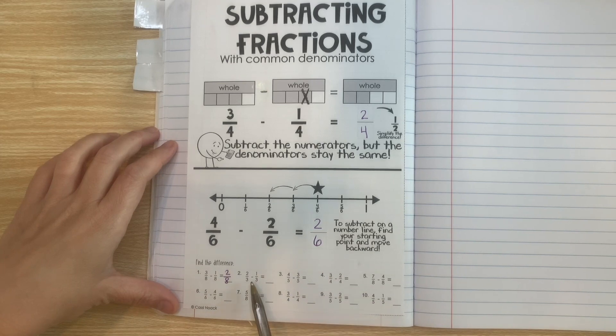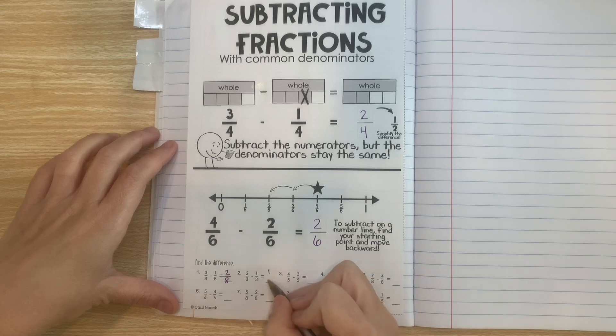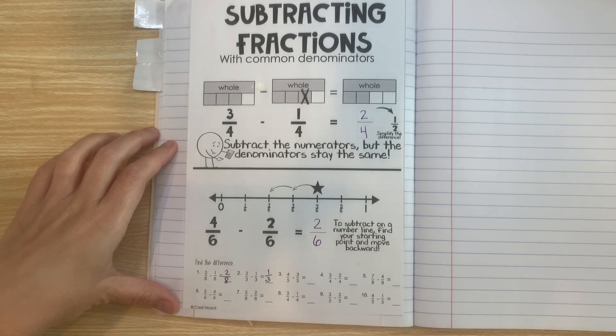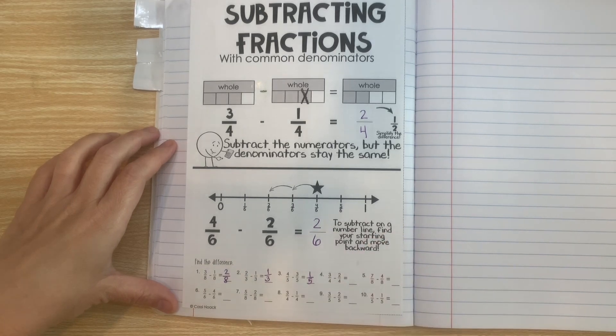Now let's look at this one. 2 minus 1 is 1 and the denominator stays the same. 4 minus 3 is 1 and the denominator stays the same.